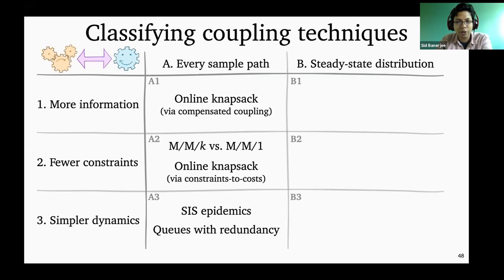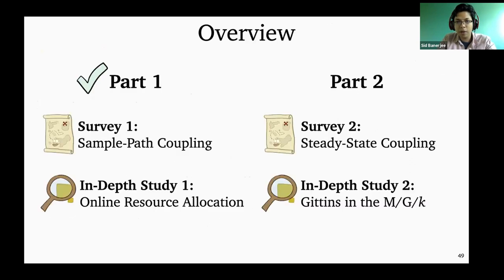I'm going to jump straight into steady state techniques. Steady state techniques are going to be somewhat more complicated because we know less about the underlying distribution we are trying to understand. The way we're going to do it is first give a high-level insight into certain widely used techniques for doing steady state coupling, and then go into one particular example in more detail — the example of the Gittins index for MGK policies.